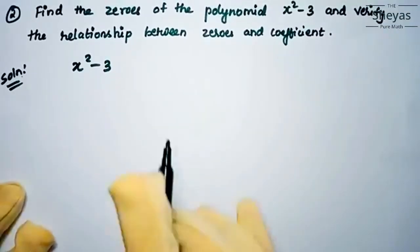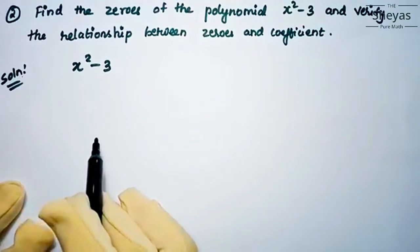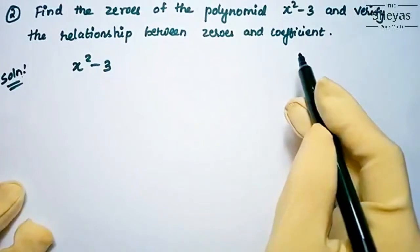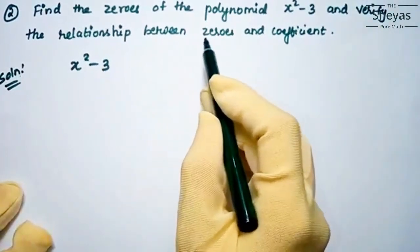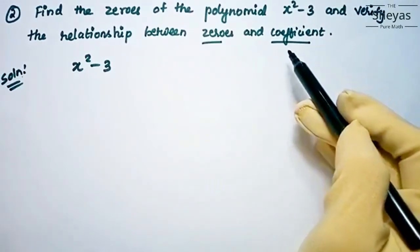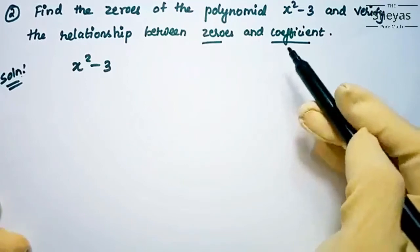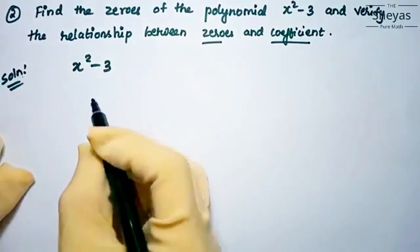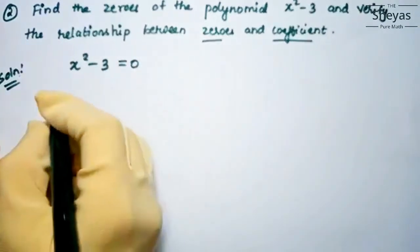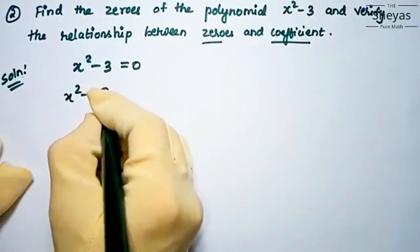Next problem: find the zeros of the polynomial x squared minus 3, and verify the relationship between zeros and coefficient. The polynomial given is x squared minus 3. We set it equal to zero: x squared minus 3 equals zero. We can rewrite this as x squared minus root 3 squared, since root 3 squared equals 3.